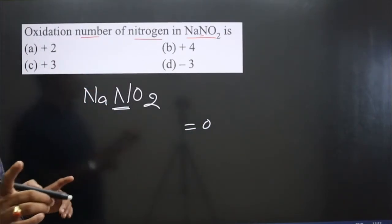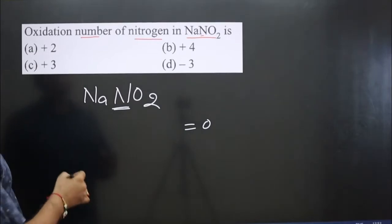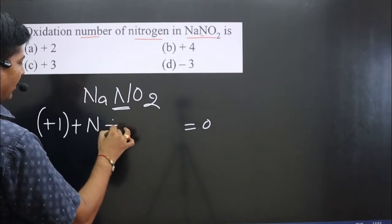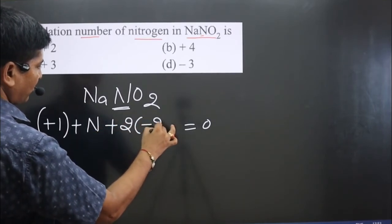Sodium is the first group element. First group element present in any compound will always show plus 1 oxidation number. Then 1 nitrogen is there. How many oxygen? 2 oxygen. Each oxygen is minus 2.